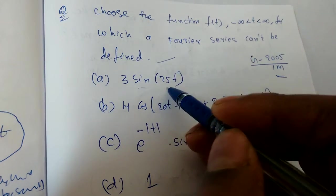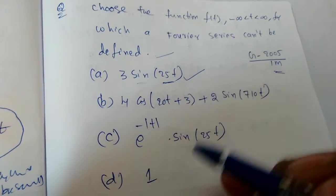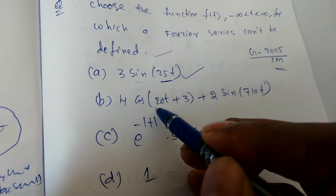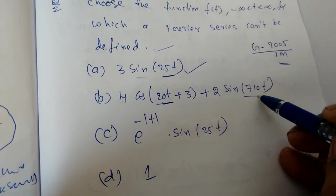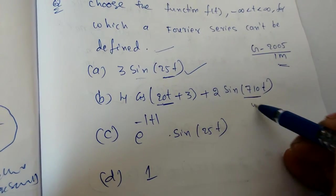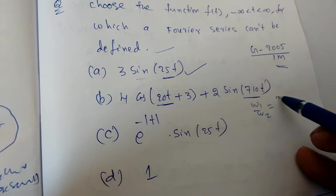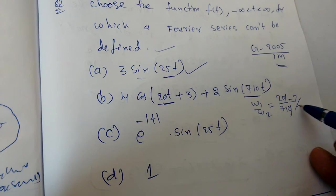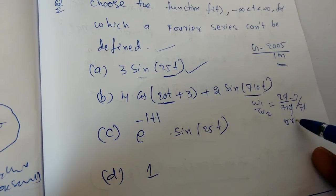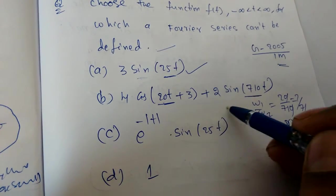3 sin 25t, it is a periodic signal, so it can be done. Now see, it is containing 20t, that is not containing pi, and this 71t, this is also not containing pi. That is omega 1 by omega 2, which is 20 by 710, 2 by 71 is a rational number. So it is also periodic.